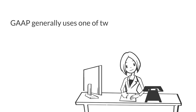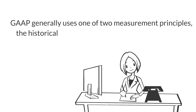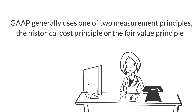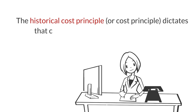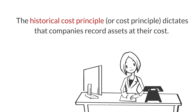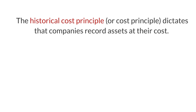GAAP generally uses one of two measurement principles: the historical cost principle or the fair value principle. The historical cost principle, or cost principle, dictates that companies record assets at their cost. This is true not only at the time the asset is purchased, but also over time as the asset is held.